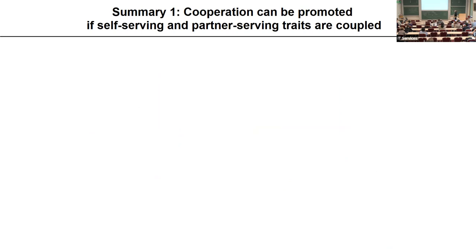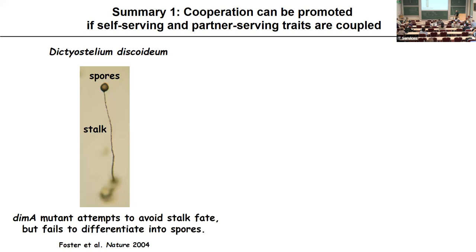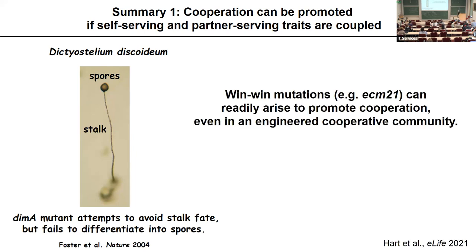Summary one: cooperation can be promoted if self-serving and partner-serving traits are coupled. We can look back at natural systems — in the Dictyostelium system, when cells are starved they aggregate and form a fruiting body; a fraction become stalk (an evolutionary dead end) and the rest become spores which can reproduce. Kevin Foster showed that DMA mutants that attempt to avoid stalk fate also cannot differentiate into spores — they refuse to serve partner and also cannot serve self. We showed that win-win mutations can readily arise to promote cooperation, even in an engineered community with no history of cooperation.